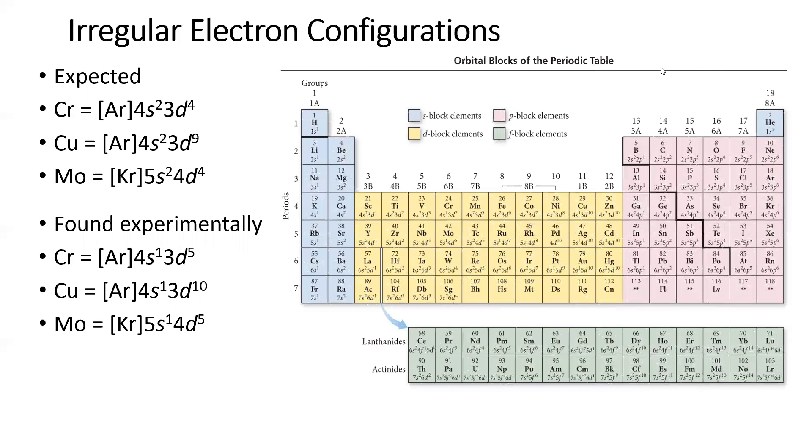So what's happening? So when we look at the particular group of 6 and the group of 11, we're actually noticing that the s sublevel, instead of being completely filled, is half-filled in these irregular configurations. So the next slide is going to explain why is the s sublevel half-filled. And we also start noticing that the d sublevels, instead of almost being half-filled or all the way filled, they end up becoming half-filled or all the way filled.